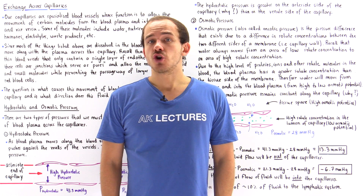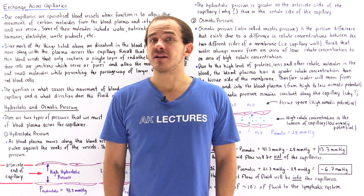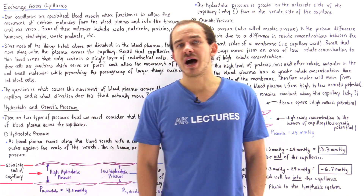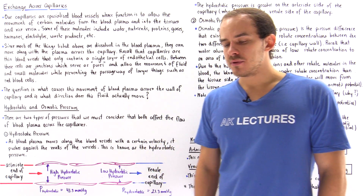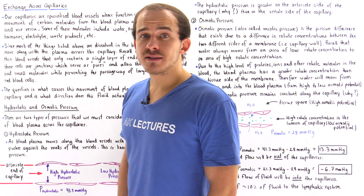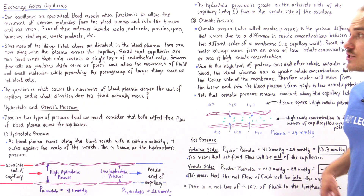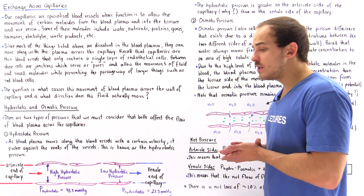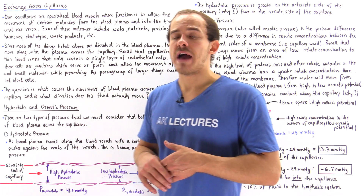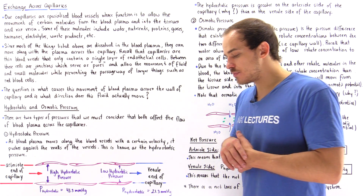Our systemic capillaries are specialized blood vessels whose function is to exchange and allow the movement of nutrients and waste products between the tissue side and the blood plasma side of our capillaries. Things like water molecules, proteins, gases, nutrients and waste products, hormones and electrolytes — all these things dissolved in the blood plasma must be able to move across the wall of our capillary. The question is, how does this movement actually take place?